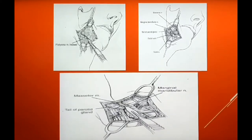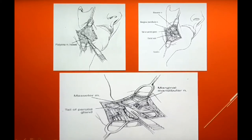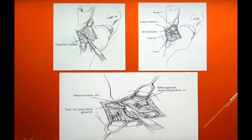The masseter is attached to the lateral aspect of the ramus, so you cut the masseter muscle to gain access and visibility to the angle and the lateral aspect of the ramus. The muscle, periosteum, and other soft tissues along with the marginal mandibular nerve are then retracted superiorly, as you can see in the diagram. This is how you expose the fracture site.